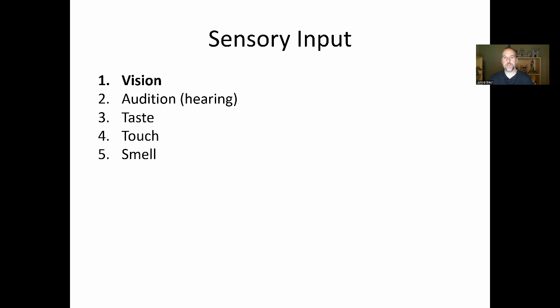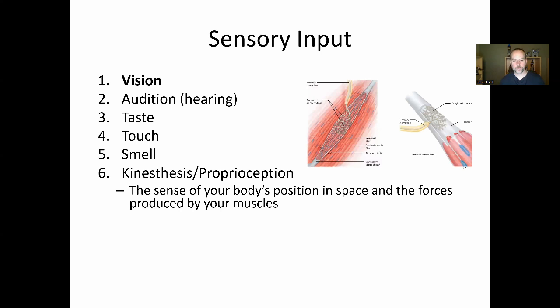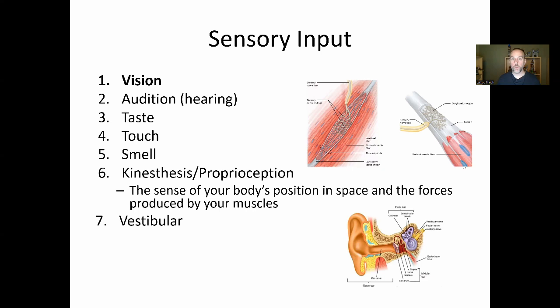How many senses we have is a matter of debate — I'd say at least nine. Our sixth sense is not the ability to see dead people, but kinesthesia or proprioception: the sense of your body's position in space and the forces produced by your muscles, with receptors like muscle spindles and Golgi tendon organs. We also have our vestibular system, which senses linear and angular accelerations and is located within the inner ear. We can also sense temperature and pain.